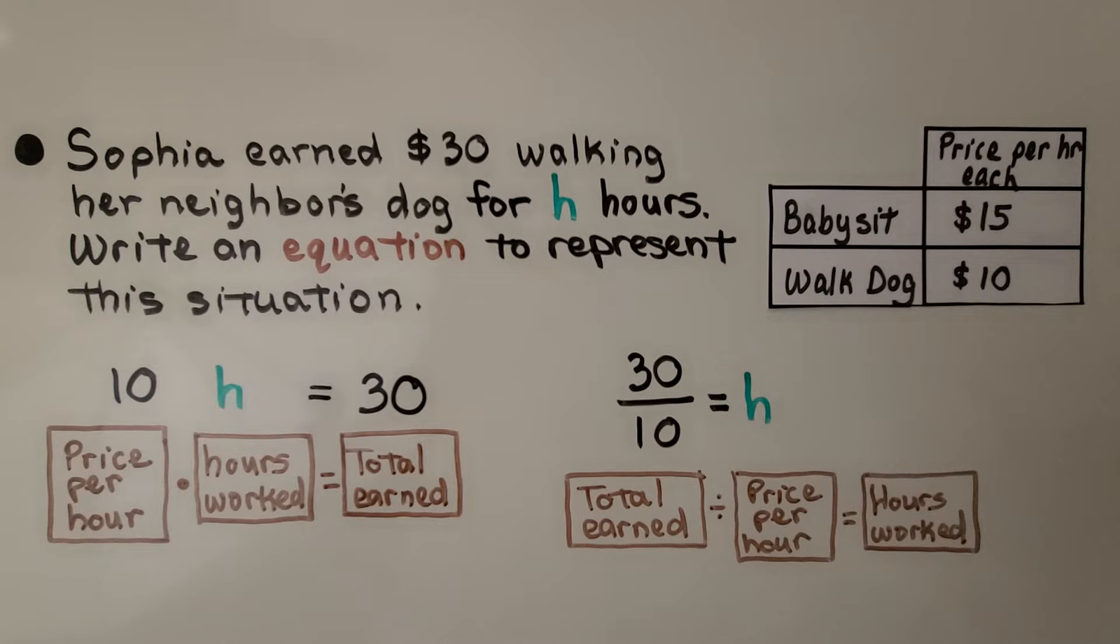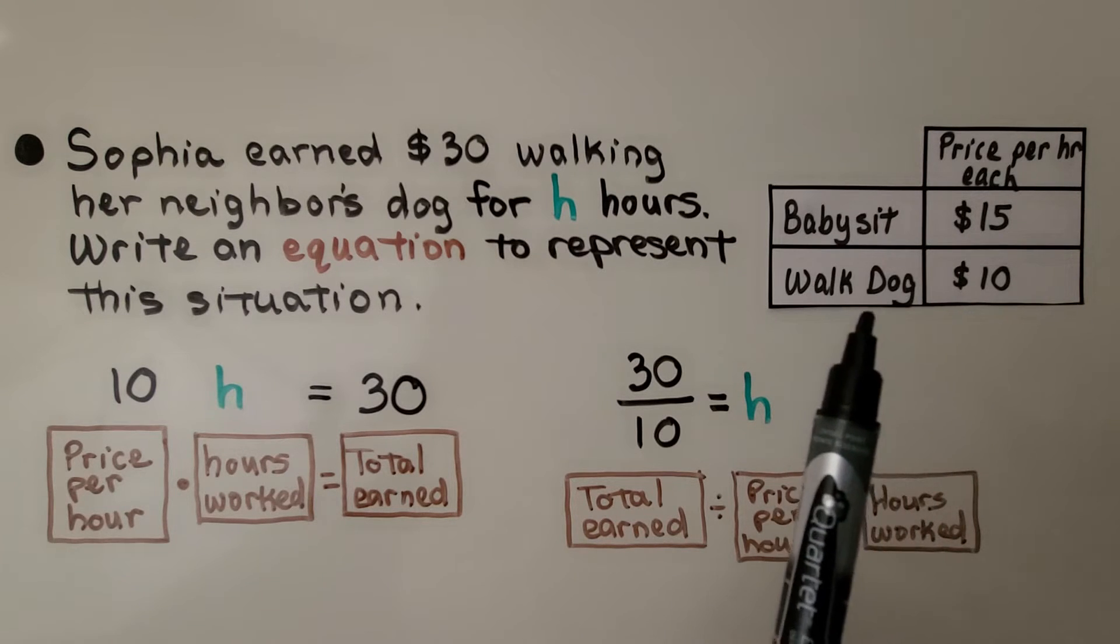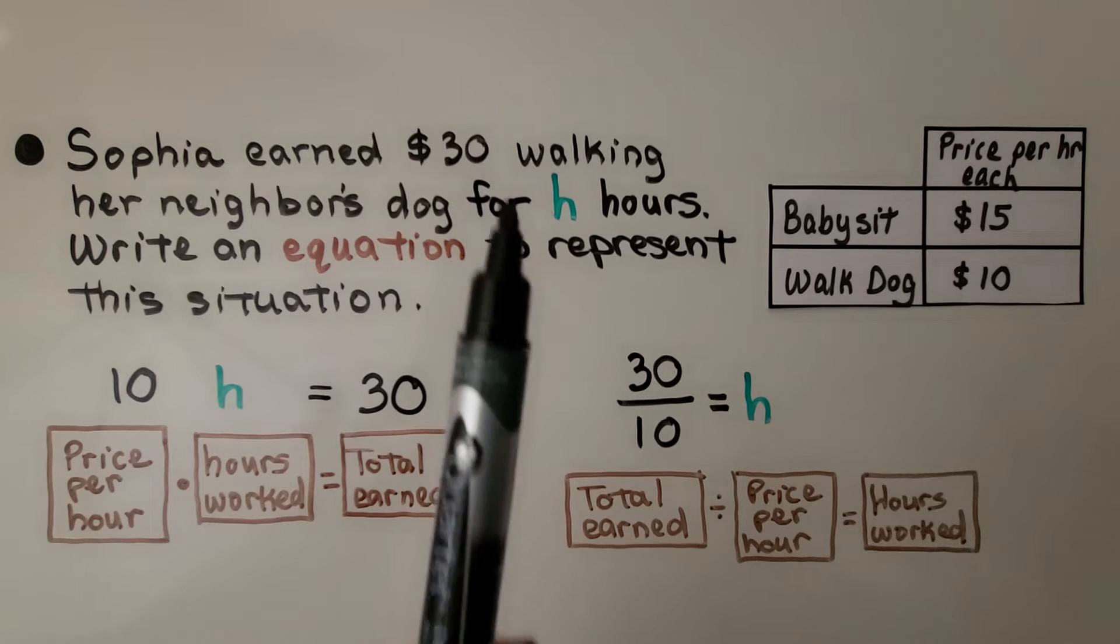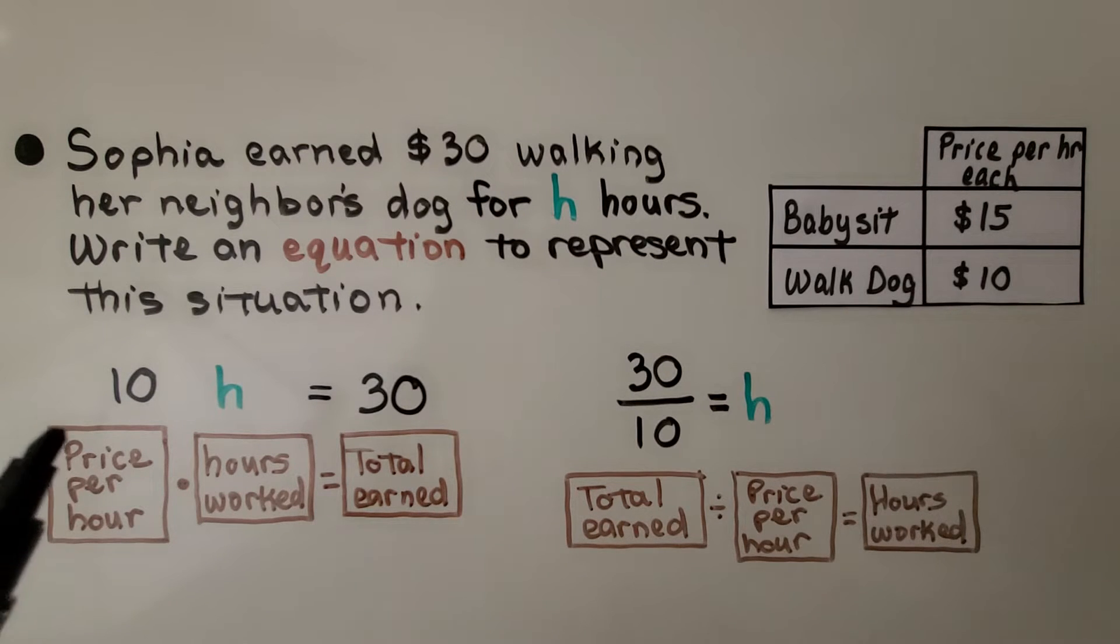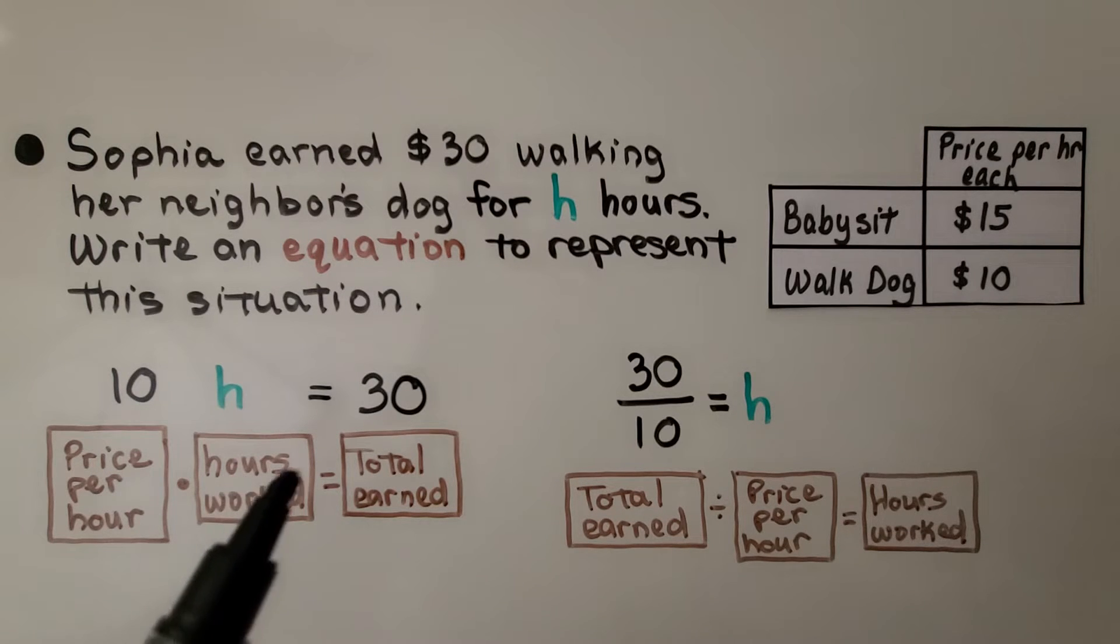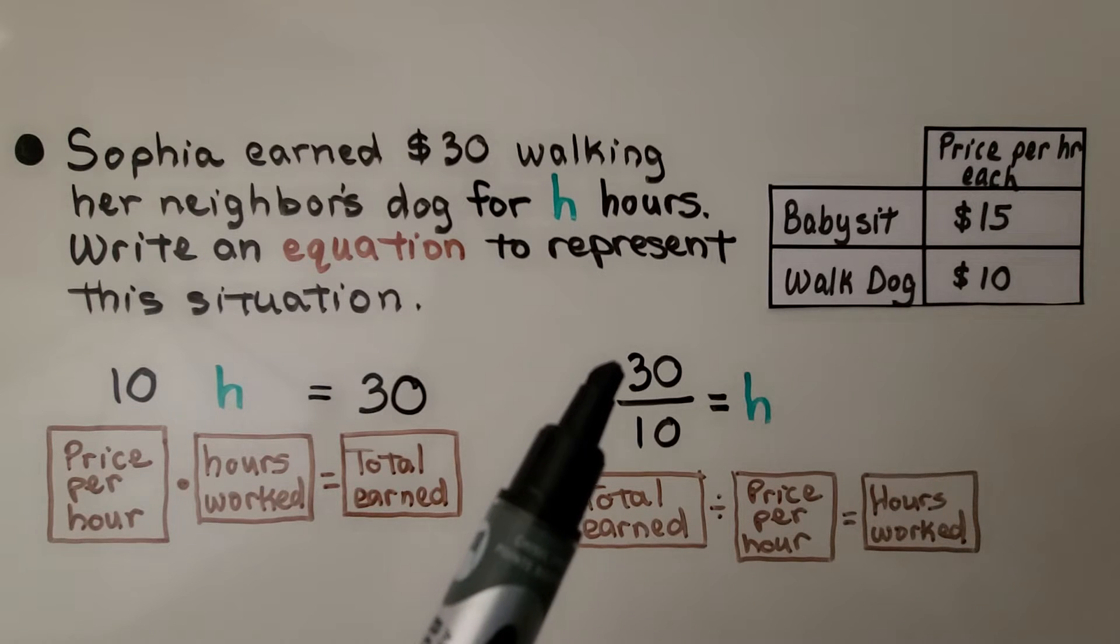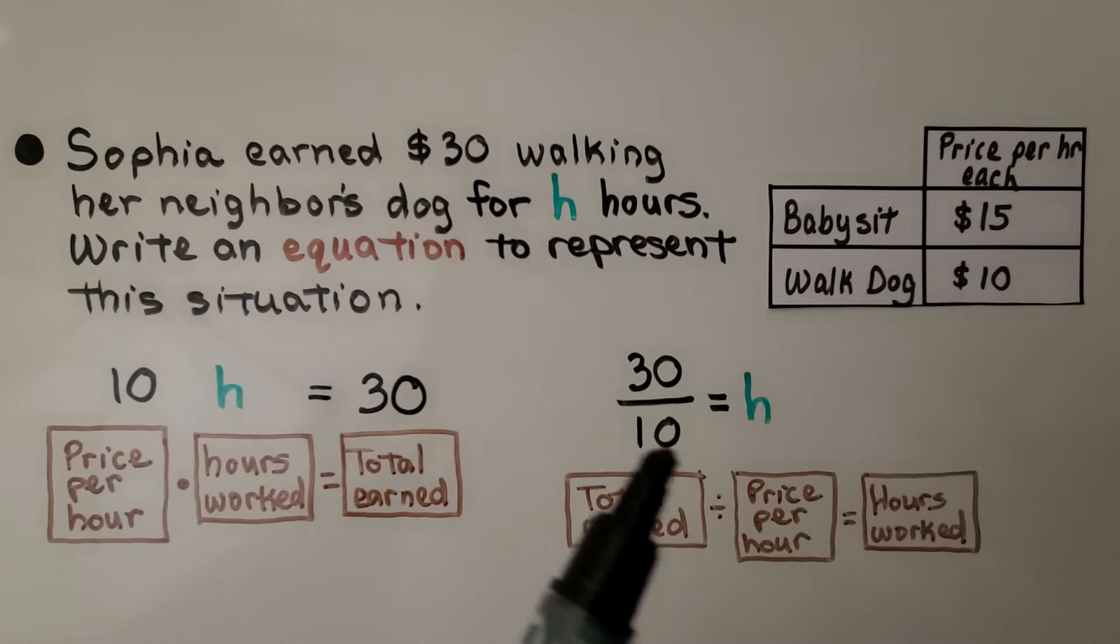Sophia earned $30 walking her neighbor's dog for h hours. So it's some unknown amount of hours. Write an equation to represent the situation. We can see this includes a table of what she charges per hour for babysitting and walking a dog. Well, if she earned $30, we could do the $10 an hour, her price per hour, times how many hours she worked to equal the $30 she earned. It might make more sense to do the $30 she earned divided by the $10 per hour to find out how many hours she worked.